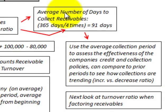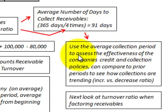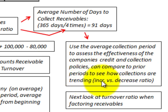We can also look at the average number of days to collect these receivables: 365 days per year divided by our turnover ratio of four gives us an average of 91 days to collect receivables. We use this average collection period to assess the effectiveness of the company's credit and collection policies, and we can compare prior periods to see how collections are trending.